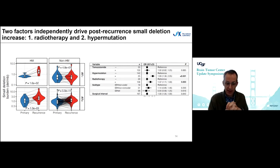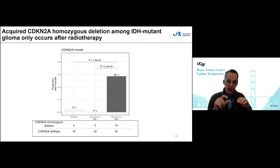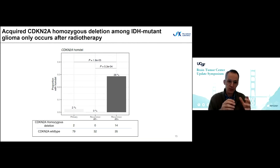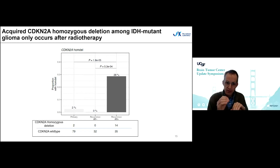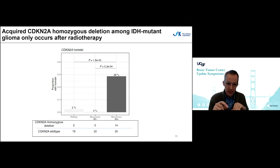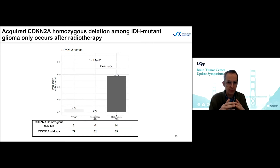We clearly identify radiation therapy as a driver of the number of small mutations in glioma. We evaluated whether there were biomarkers — perhaps similar to MGMT methylation for hypermutation — either at diagnosis or at recurrence. The most prominent biomarker we found was the presence of a homozygous deletion of the CDKN2A tumor suppressor. Only in cases treated with radiation do we find CDKN2A homozygous deletion at recurrence, and that almost always coincided with an increase in small deletions — so CDKN2A homozygous deletion among IDH mutant gliomas is a biomarker for a radiation effect.